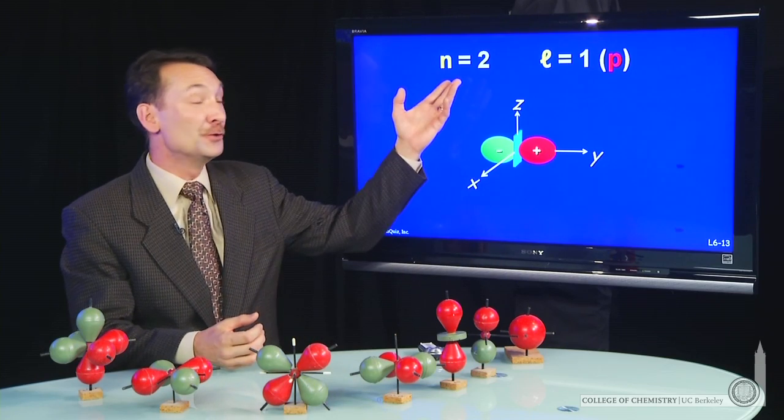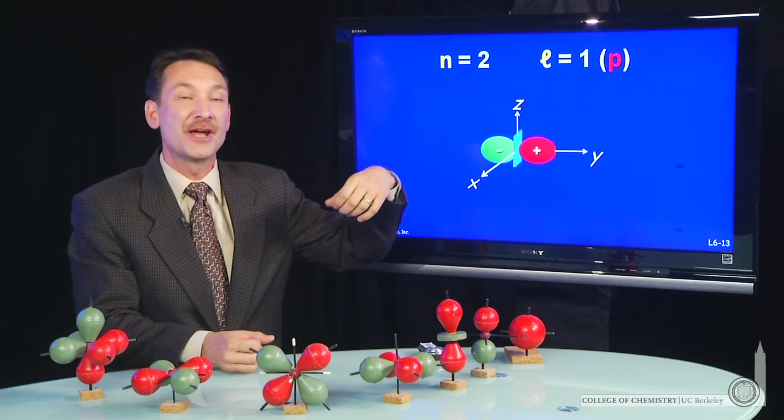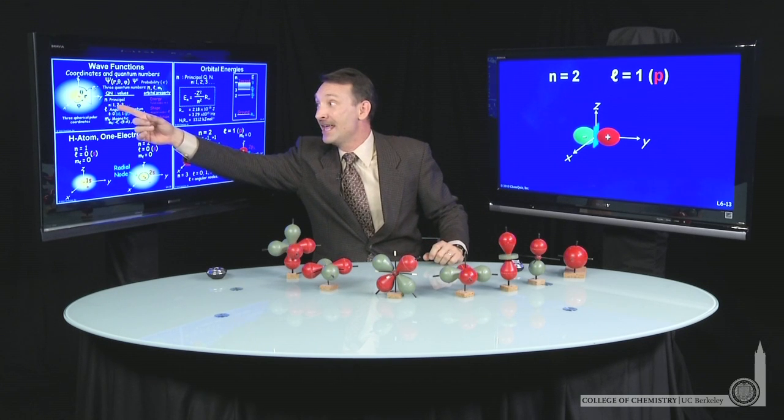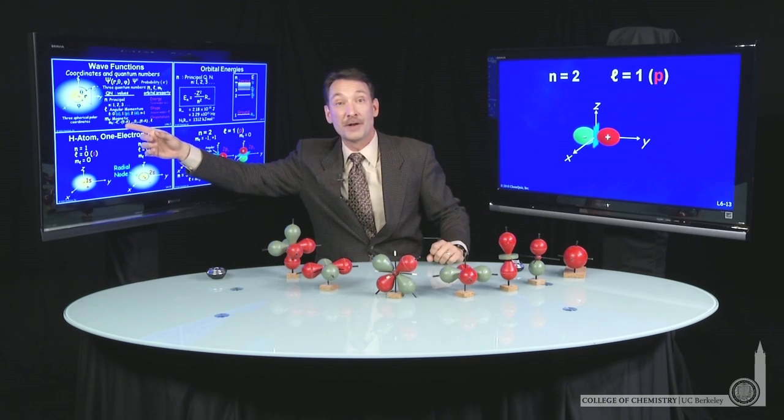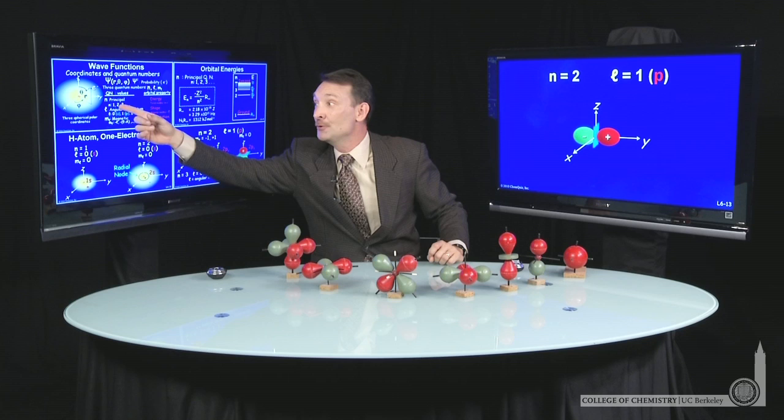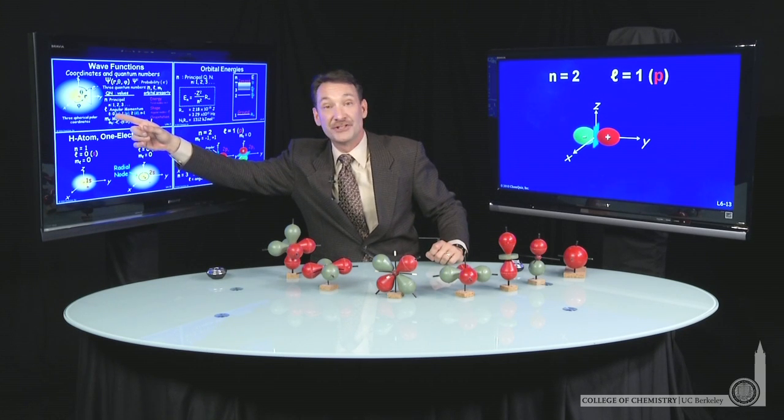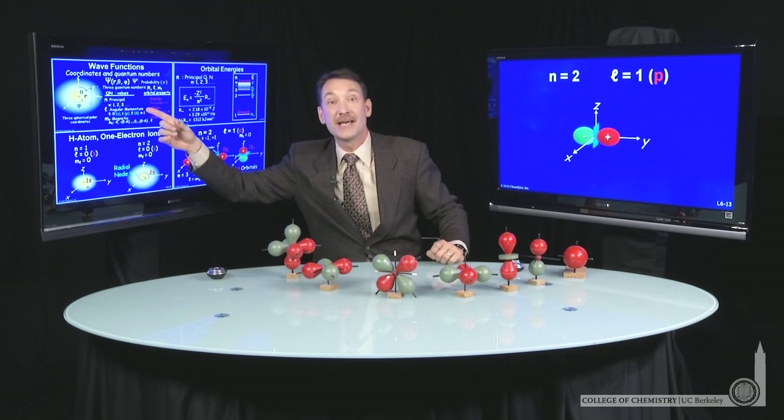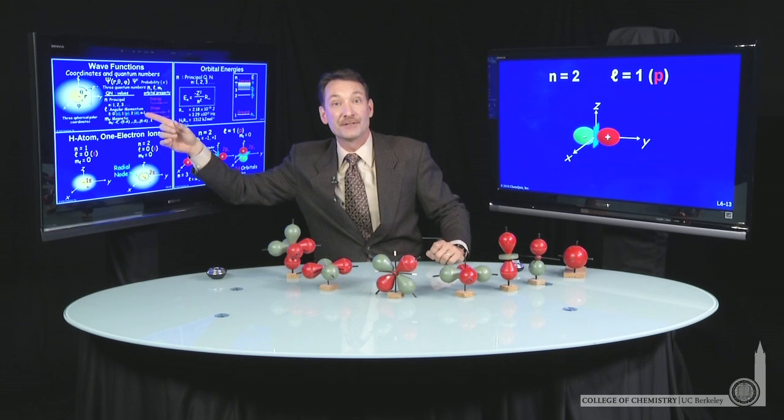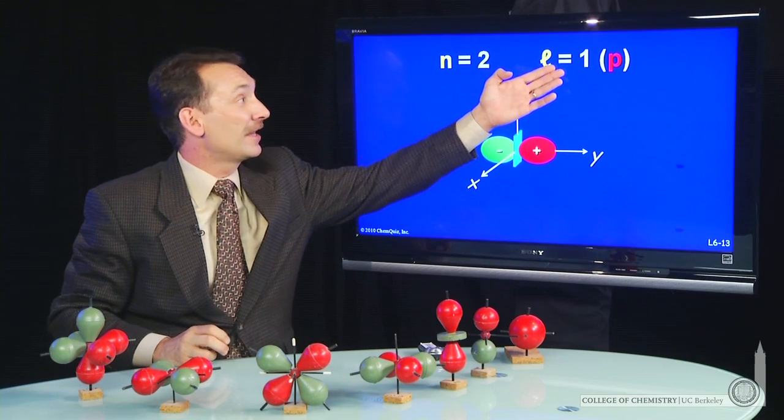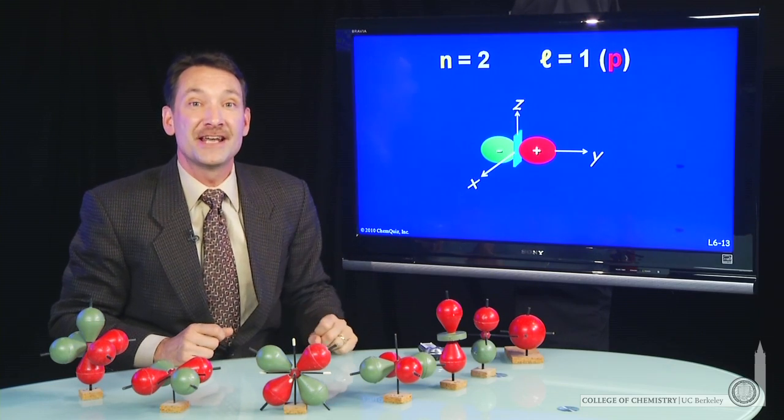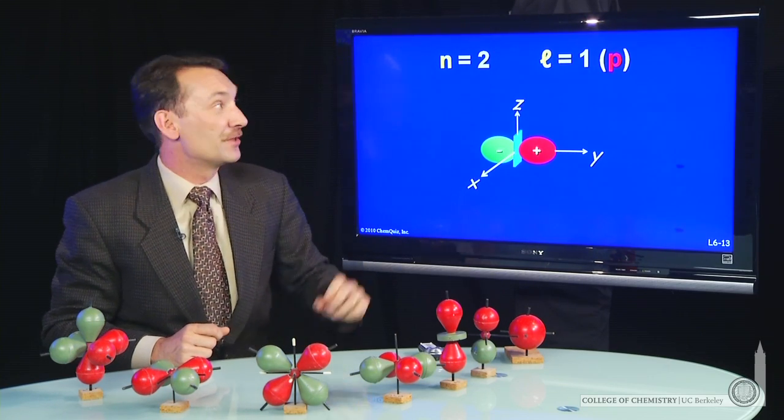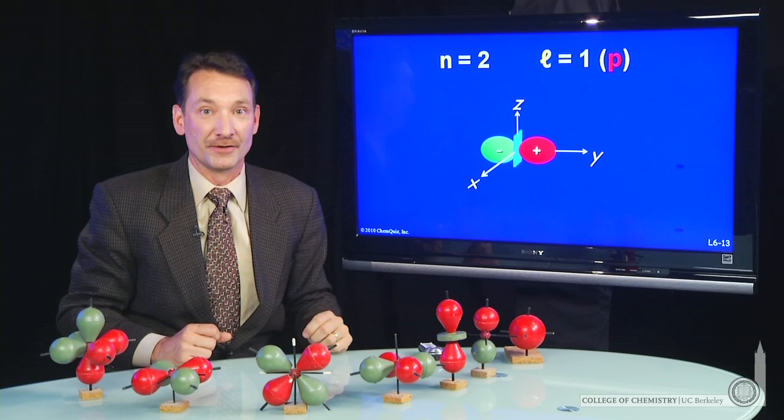So we're up to n equal 2, and one possible value for n equal 2 is l equal 1. Remember, values of n determine the values of the other quantum numbers. For n equal 2, you can have l equal 0 or 1. l goes from 0 to n minus 1 in integer steps. So the value of l equal 1, we give the letter designation p. So these are going to be p orbitals.